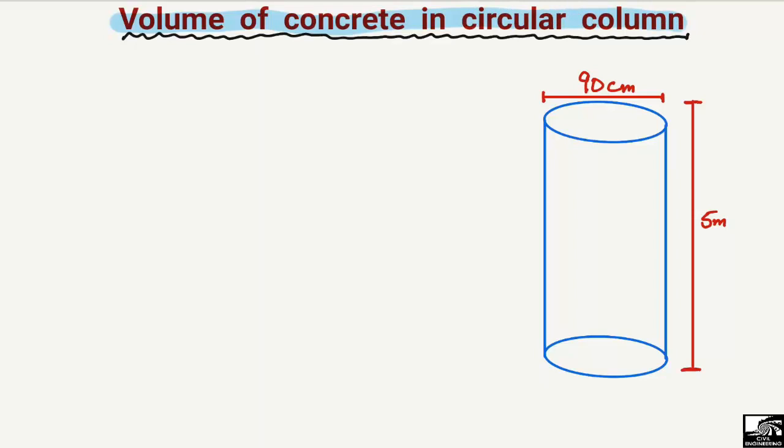The column dimensions are known to us. For example, the diameter of the circular column is 90 centimeters and the height of the column is given to us, which is 5 meters.